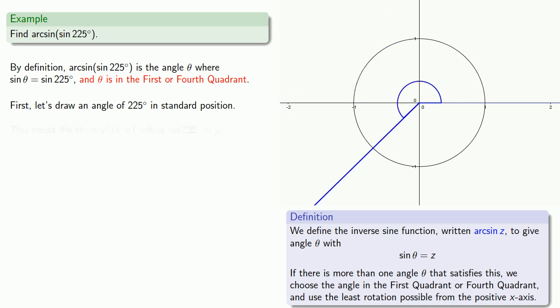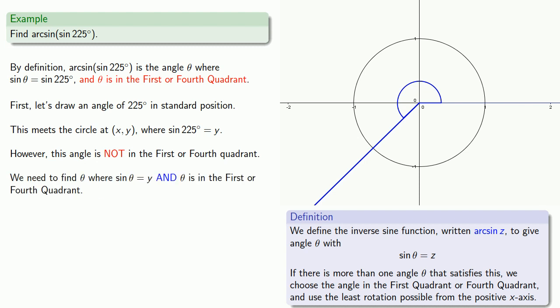This angle meets the circle at some point xy, where the sine of 225 degrees is equal to y. However, this angle is not in the first or fourth quadrant, and so we need to find an angle theta where sine of theta equals y, and theta is in the first or fourth quadrant.